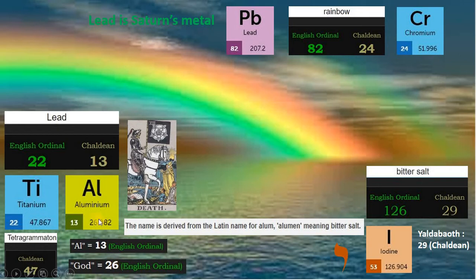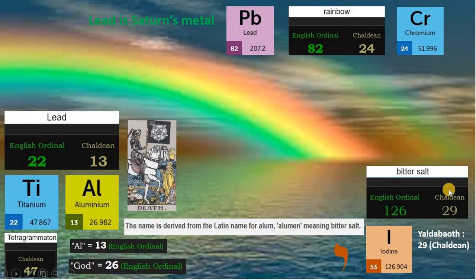Aluminium is derived from the word aluminum, meaning bitter salt. Bitter salt is 126 in English ordinal, matching the atomic mass of iodine, the yod. Bitter salt is 29 in Chaldean, just like Yaldabaoth.